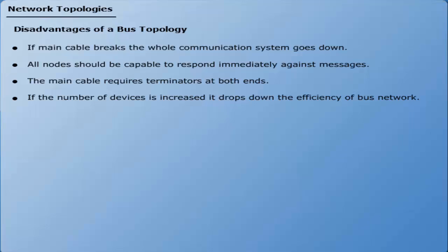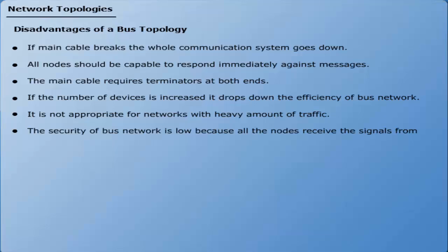Number 5: It is not appropriate for networks with heavy amount of traffic. Number 6: The security of bus network is low because all the nodes receive the signals from the source.